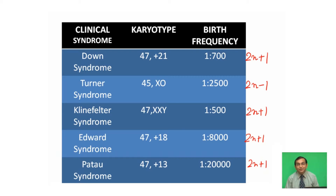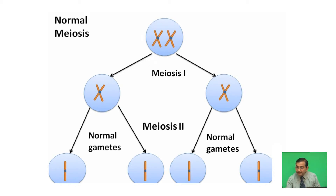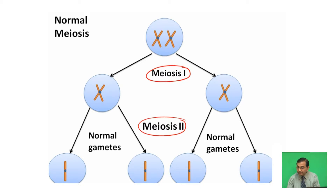How does this non-disjunction originate? Chromosomal abnormalities occur due to non-disjunction. In normal meiosis, there are two meiotic divisions — the first meiotic division, called the reduction division, and the second meiotic division, called the equational division. At the first meiotic division, two chromosomes separate, and at the second meiosis, normal haploid gametes are formed. This is the result of a normal meiotic division.